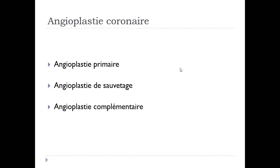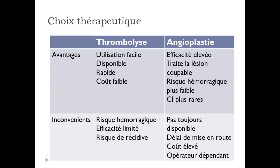L'angioplastie, trois types : primaire, c'est réalisée d'emblée ; de sauvetage, c'est réalisée après une thrombolyse ; complémentaire, c'est à distance. Choix thérapeutique : l'avantage de la thrombolyse, c'est qu'elle est d'utilisation facile, disponible, rapide et à un coût faible. L'angioplastie : l'efficacité est élevée, traite la lésion coupable, risque hémorragique plus faible, contre-indication plus rare. Les inconvénients : risque hémorragique pour la thrombolyse, efficacité limitée et risque de récidive. L'angioplastie n'est pas toujours disponible, le délai de mise en route et le coût élevé, dépendante de l'opérateur entraîné.